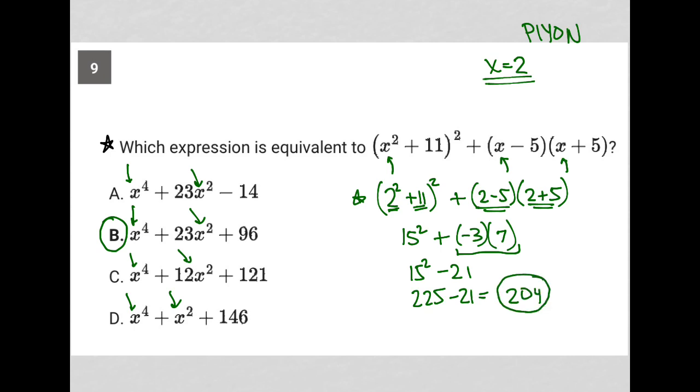But then how do we figure out which answer choice is correct? Well, the next thing you do when you're using this plug-in-your-own-number strategy is to match. And so by that, I mean we want to plug in the exact same number that we'd already used for our question, which is 2. And we will plug it into each case where there's an x. So I put a 2 here. I put a 2 there. Parentheses.